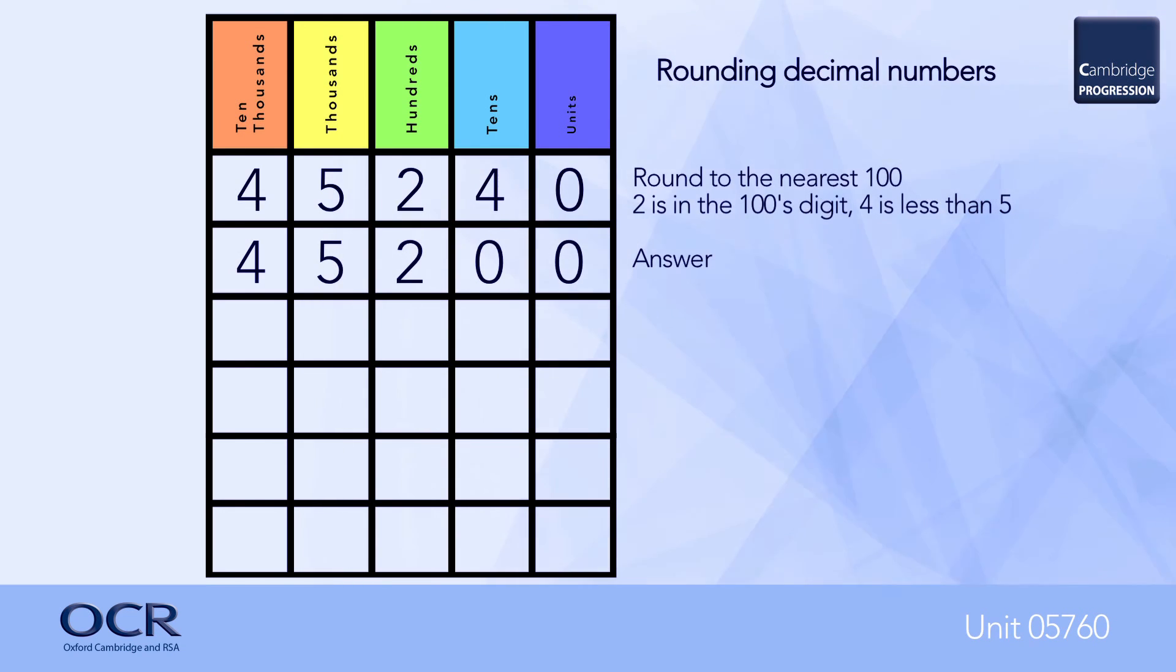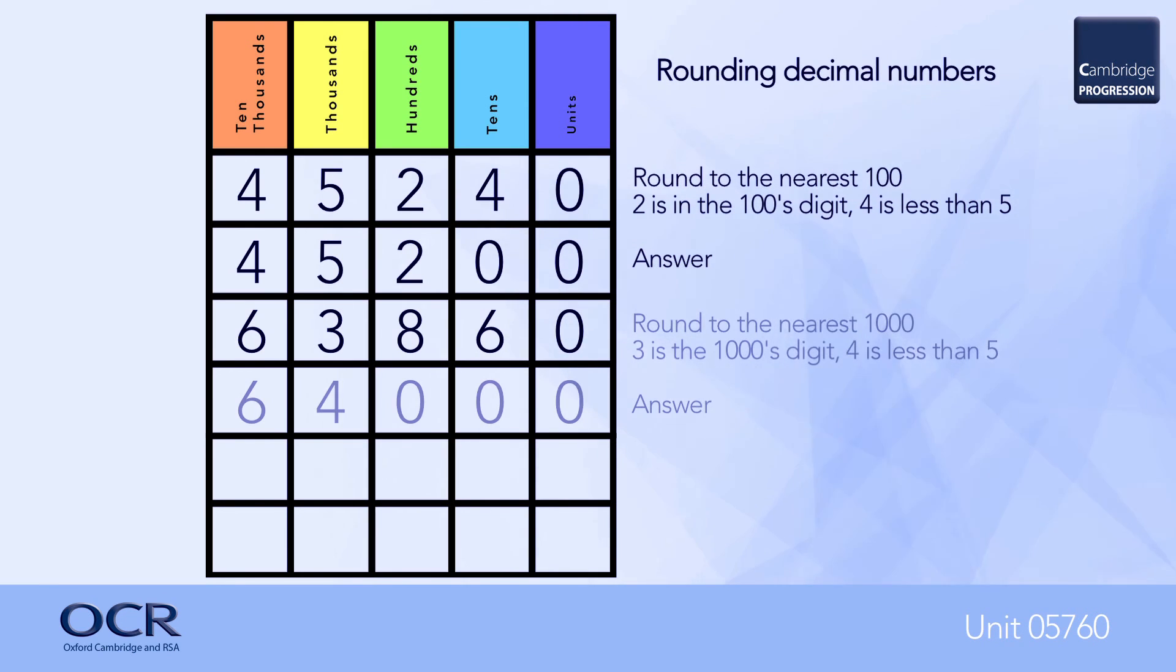When rounding whole numbers, there is a procedure to be followed. Firstly, identify the digit in the column identified by the question. Then, look at the next digit to the right.